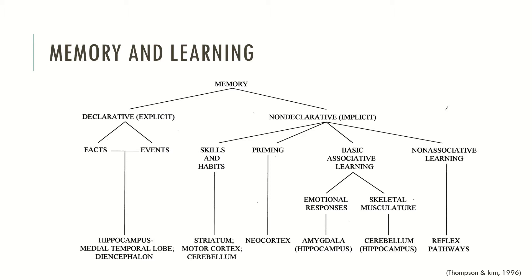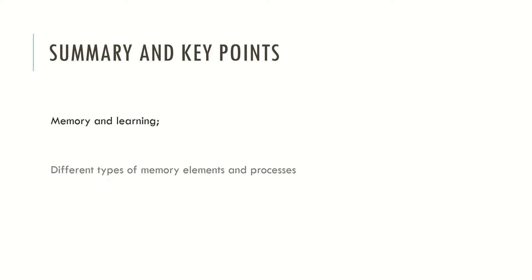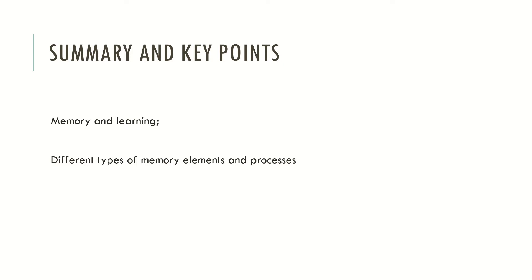I know that memory and learning are very complex themes, but don't worry — in the future I will produce different videos detailing more of these aspects of memory. Memory is a very complex neurocognitive process. So now let's see the summary and key points. Memory and learning is a human domain that is very important in everyday life and for remembering ourselves and adapting to our lives. There are different types of memory elements and processes, and we saw that there are several neuronal structures associated with different types of memories.